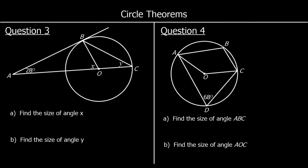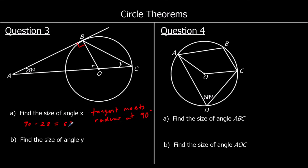Question 3: find the size of angle x. AB is a tangent and OB is a radius, so the tangent meets the radius at 90 degrees — a tangent and a radius are perpendicular. Now using angles in a triangle adding up to 180: 180 − 90 − 28 = 62 degrees. So x is 62 degrees.